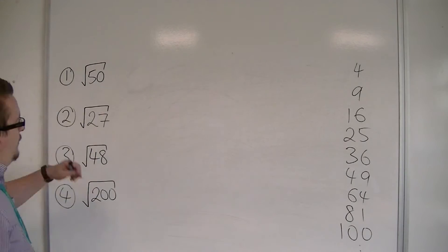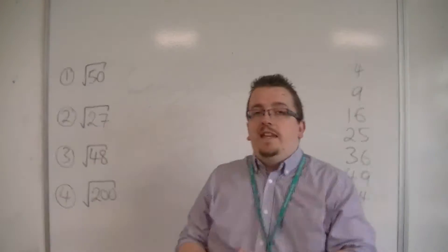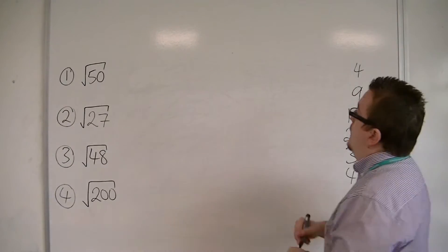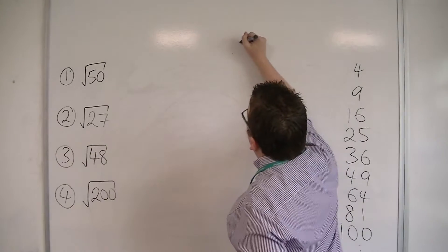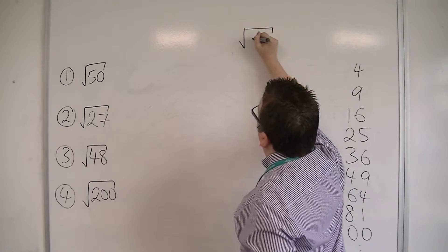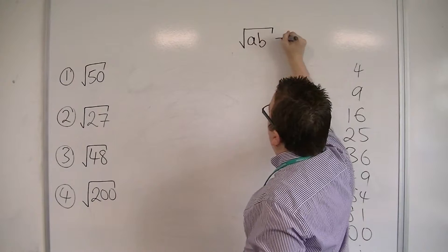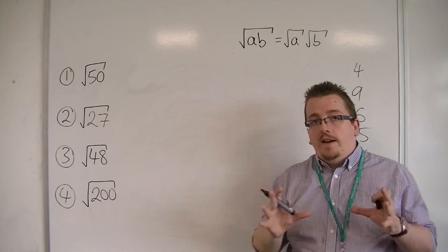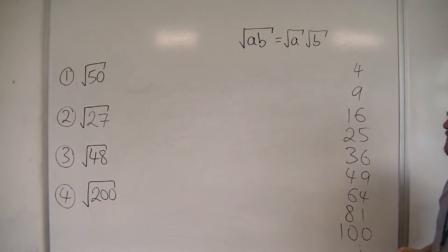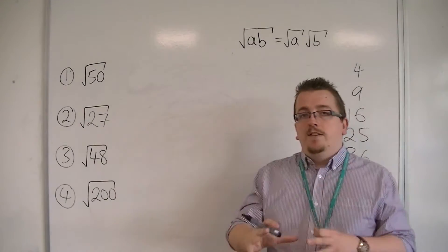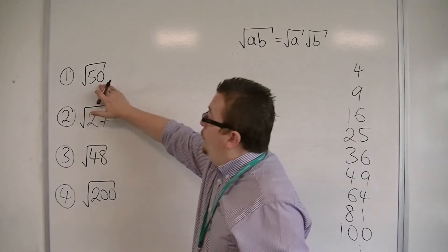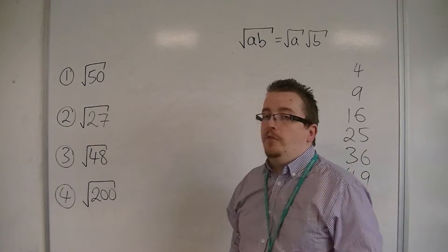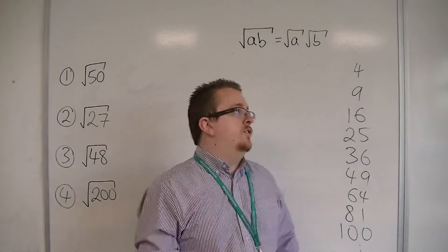So if I want to simplify each of these, the technique that I'm using is that technique where we had the square root of AB is equal to the square root of A times root B. That is what we're using here. So we want to find a square number that goes into each of these numbers here, which is a factor of each of these numbers.